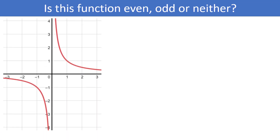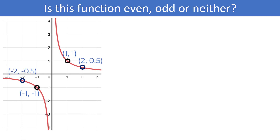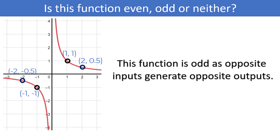How about this function — even, odd, or neither? Let's check a point. It looks like we have a point on the graph, and we also have the corresponding opposite-input point on the graph. The opposite input produced the opposite output, which indicates this is most likely an odd function. Let's check one more point to be sure — it looks like we do have the expected point. For this reason, I am comfortable saying this function is odd, as opposite inputs are generating opposite outputs.